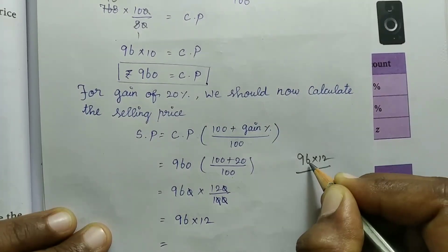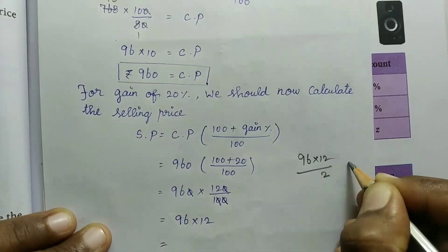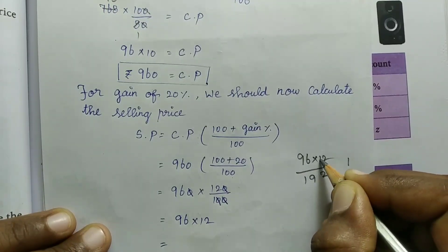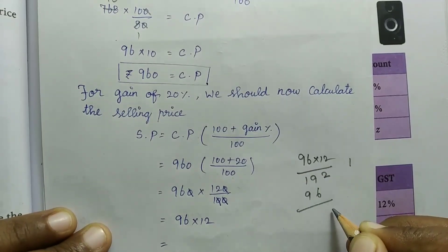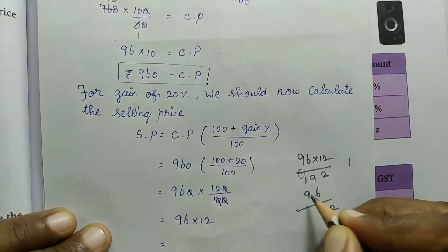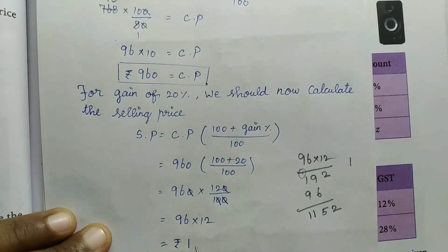Multiplying: 2 × 6 is 12, remainder 1. 9 × 2 is 18 plus 1 is 19. Then 96 × 10 gives us 960, plus 192. The answer is Rs. 1,152.